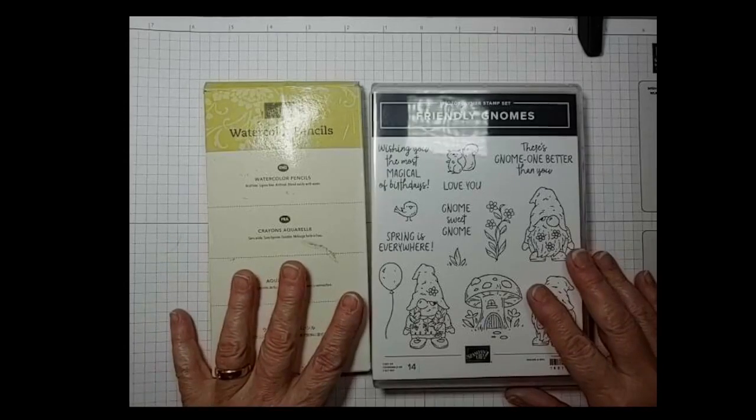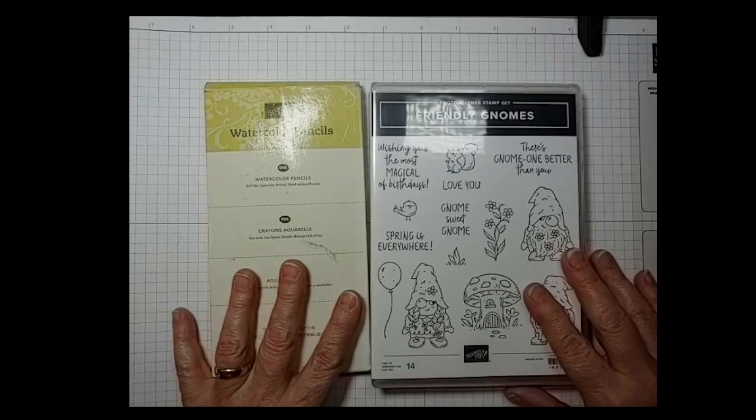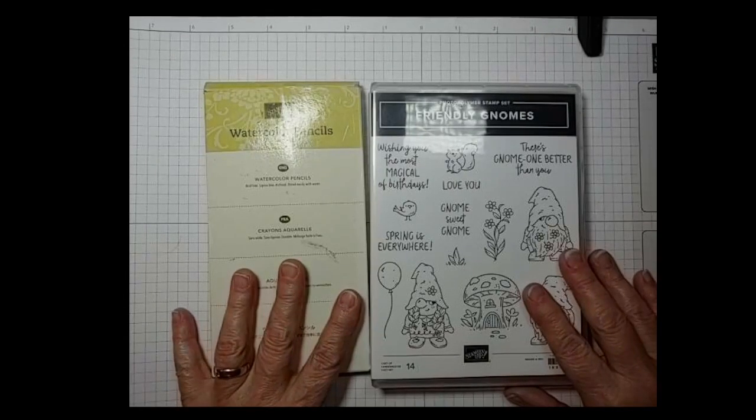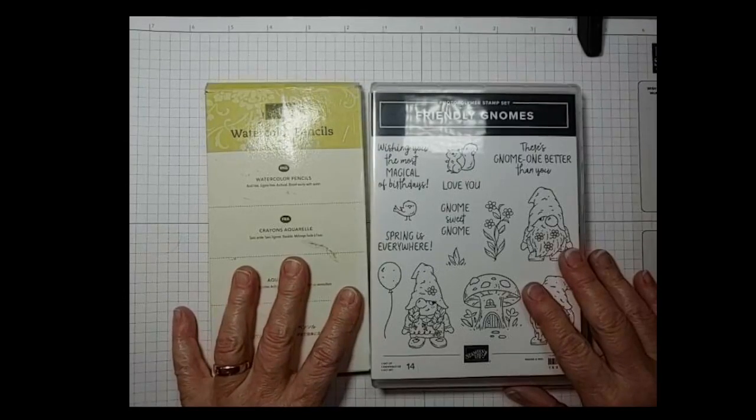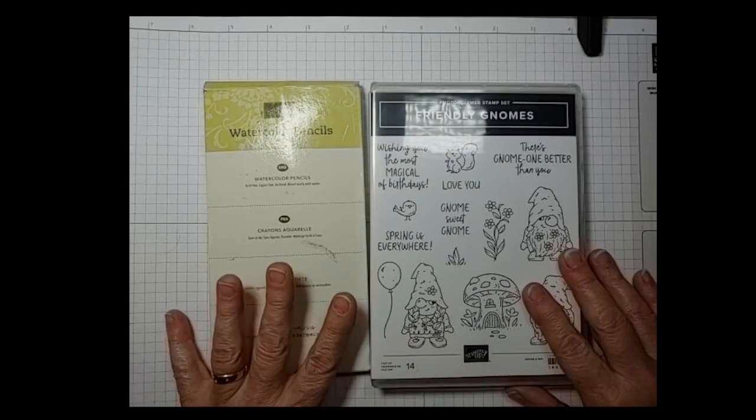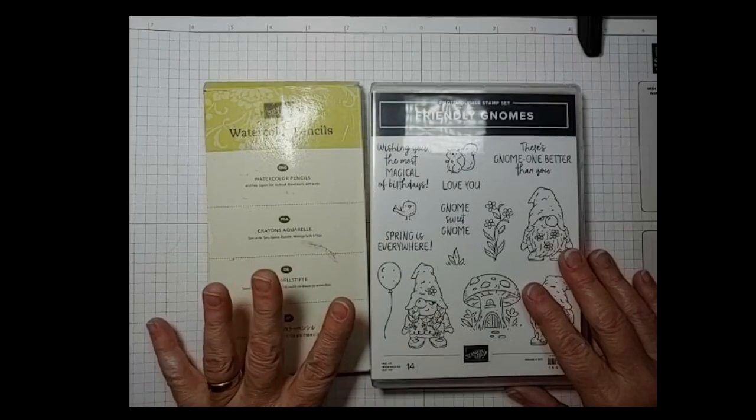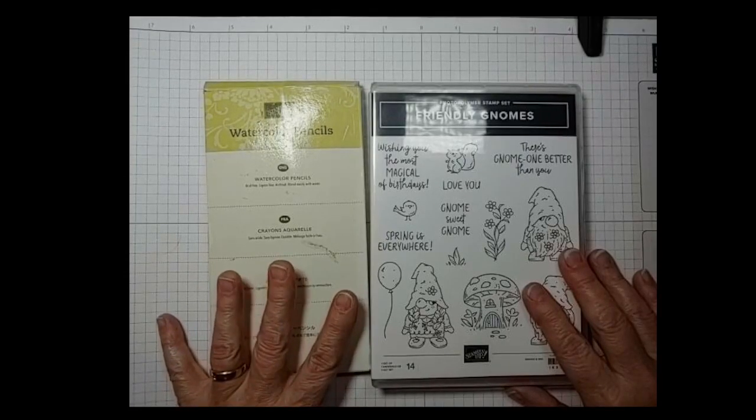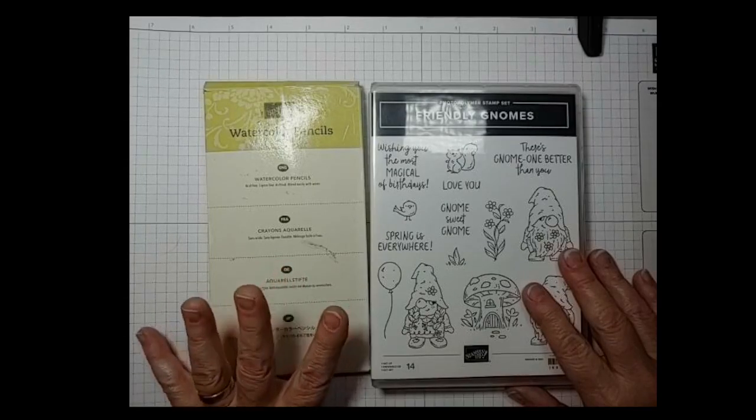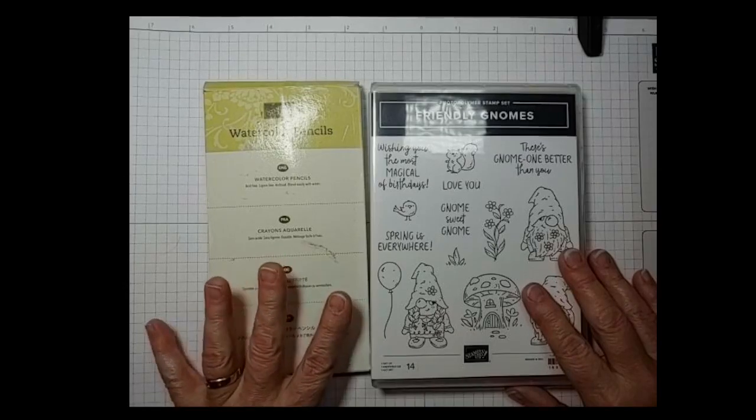I'm just going to mention a few things that are coming up. I've got a crop happening in February 18th in my home from 10 to 4 p.m. It includes lunch and the cost is $20. Then there's a class on February 23rd featuring the cup of tea bundle and we're going to make two cards. The class is $8 or free with a $30 purchase.